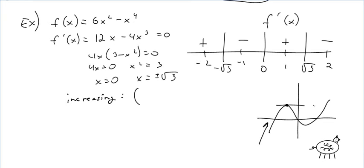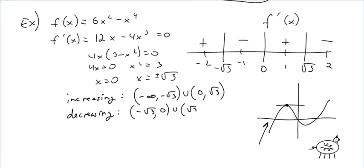The book actually uses, I think they use brackets, but we're using parentheses because we don't know what's going on over there. Okay, it's neither increasing nor decreasing. So, it's increasing between negative infinity and negative root 3, union 0 to root 3. Pretty easy.